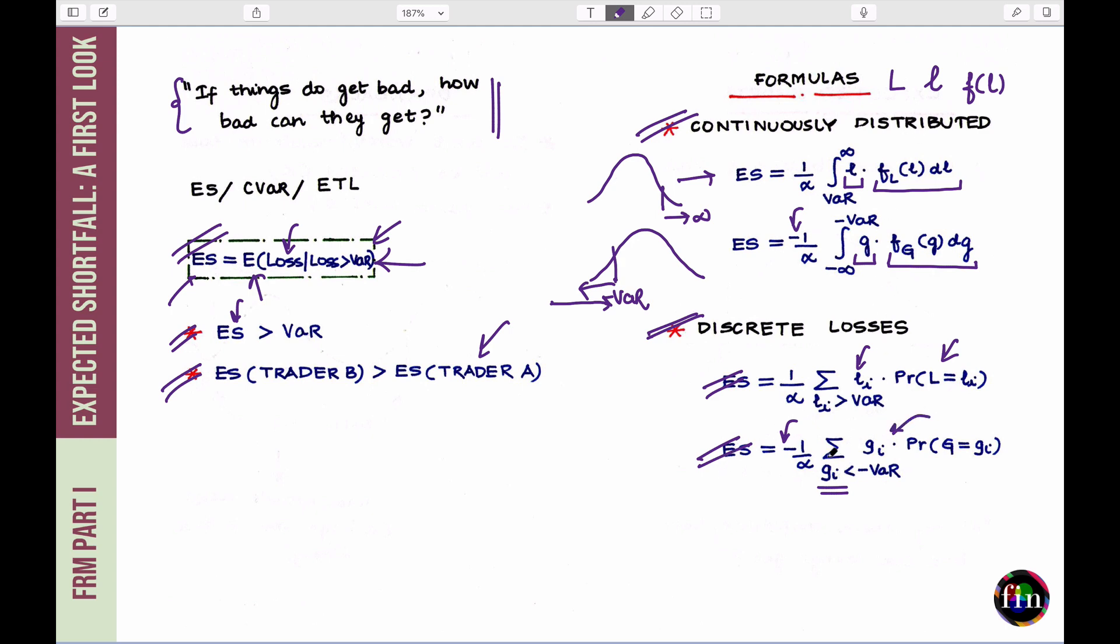So, looking at these four formulas, I think it drives home this intuition about the ES in a much stronger way. All these four formulas, basically what they are doing is, depending on whether my losses and gains are continuously distributed or discrete, they are just calculations which basically compute the conditional expectation.